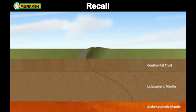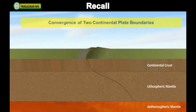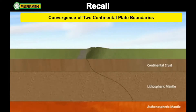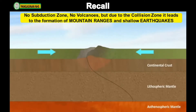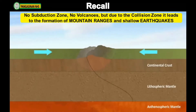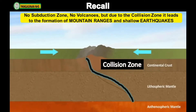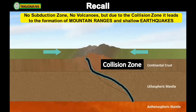In the last type of convergent plate boundary, where two continental crustal plates collide, there is no subduction zone. Therefore, no volcanoes, but rather a collision zone happens that creates mountain ranges and shallow earthquakes.